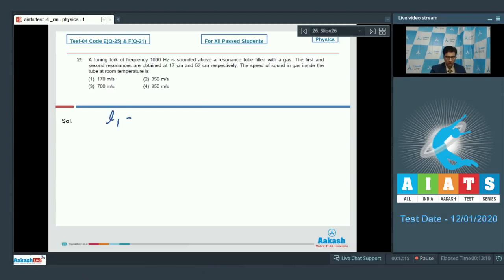Dear students, the length in the first resonance is given as 17 cm while the length in the second resonance is given as 52 cm. The frequency of the source is equal to 1000 Hz. Dear students, the speed of sound can be found out using the formula 2F L2 minus L1.